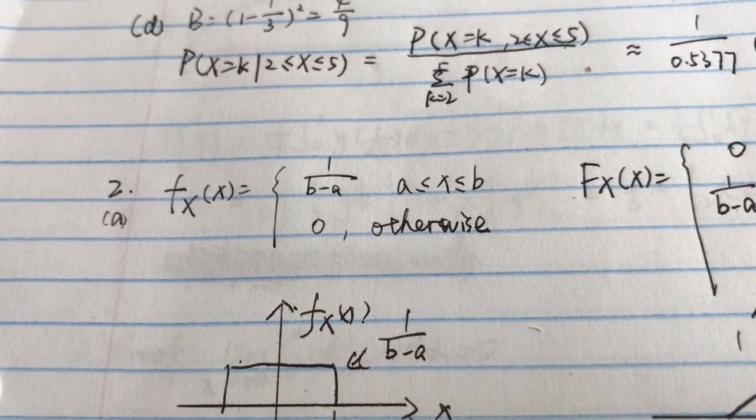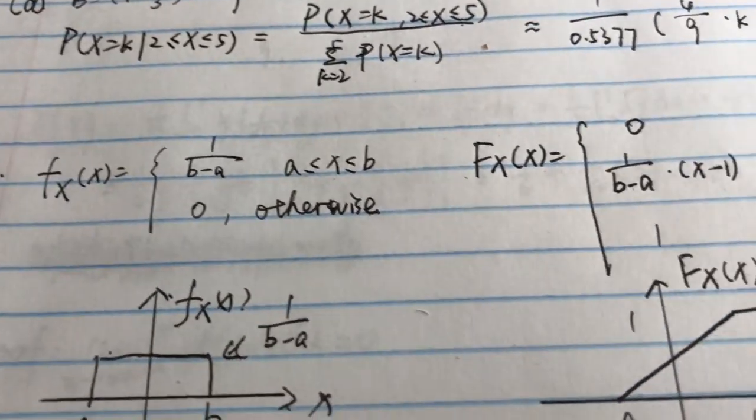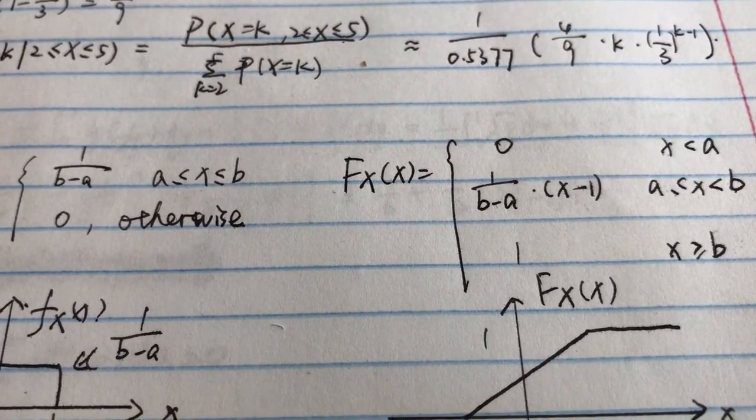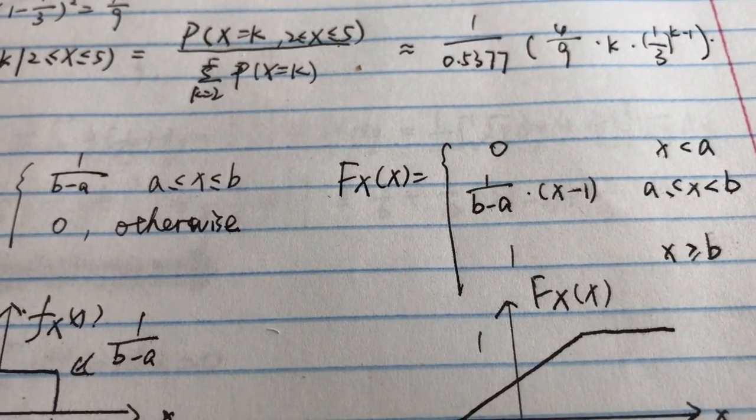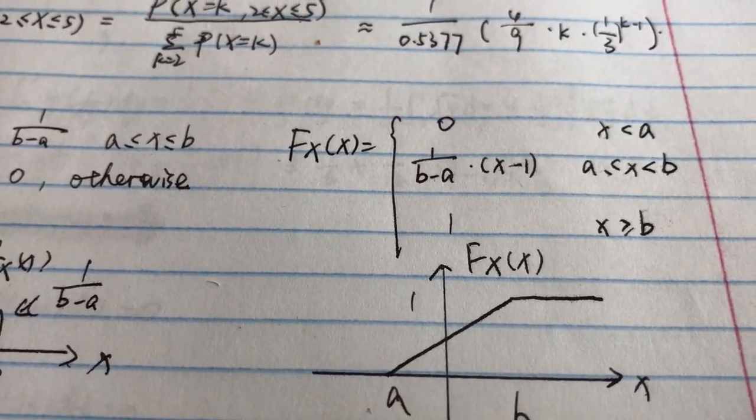And then we can also know by definition that the CDF F_x equals 0 when x is less than a.